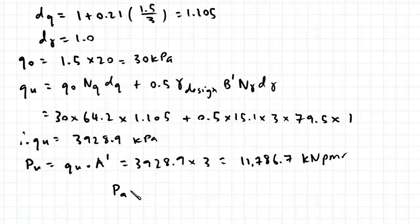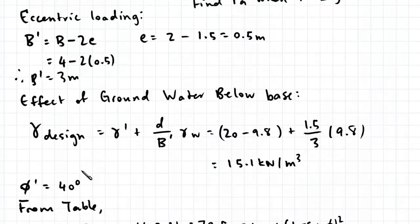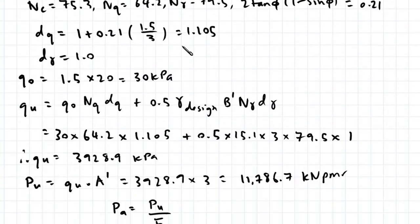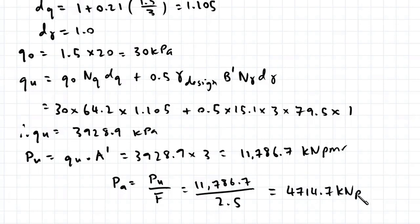And now our maximum allowable force. That's just our maximum ultimate force divided by a factor of safety F. So our factor of safety was 2.5. So 11,786 divided by 2.5. This gives us 4,714.7 kN per meter run.